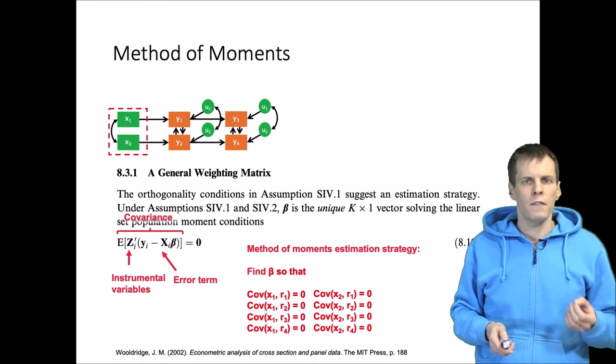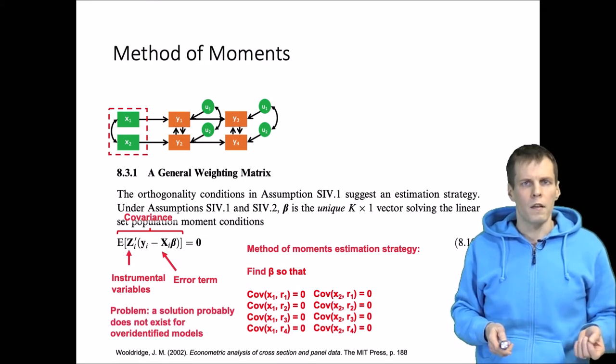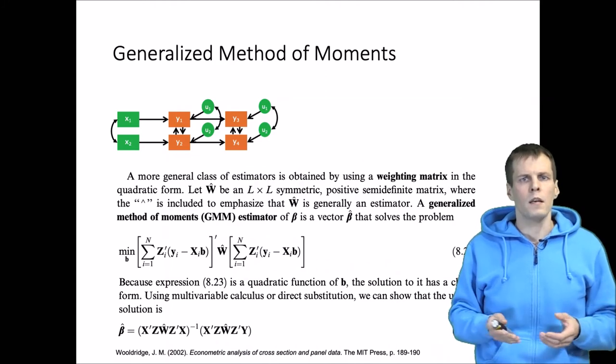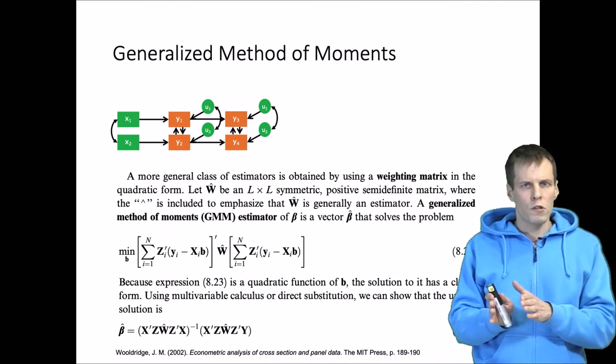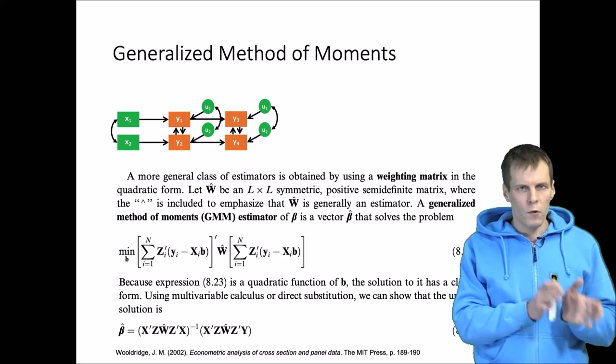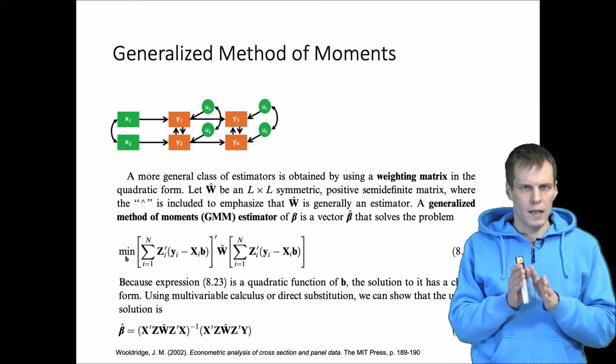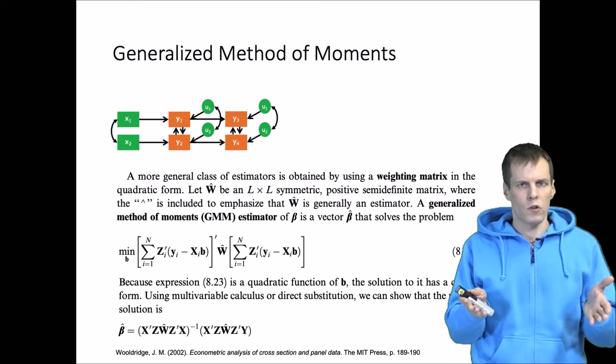If the model is over-identified, then a solution is unlikely to exist. The reason is that we have more constraints than what we need for estimation, and it is unlikely that redundant constraints are exactly the same in any small sample.